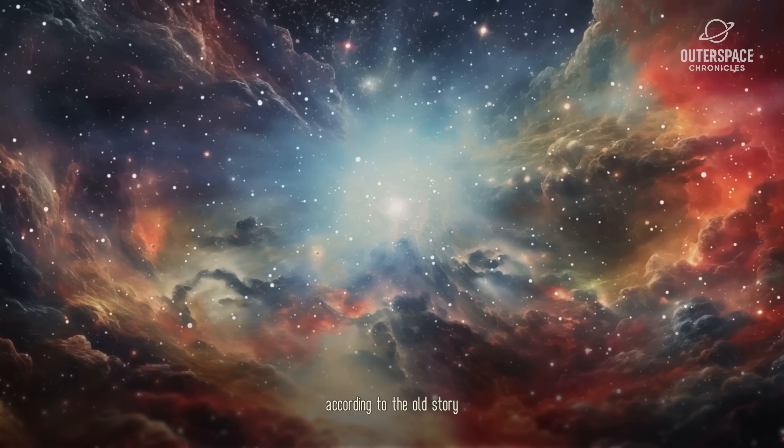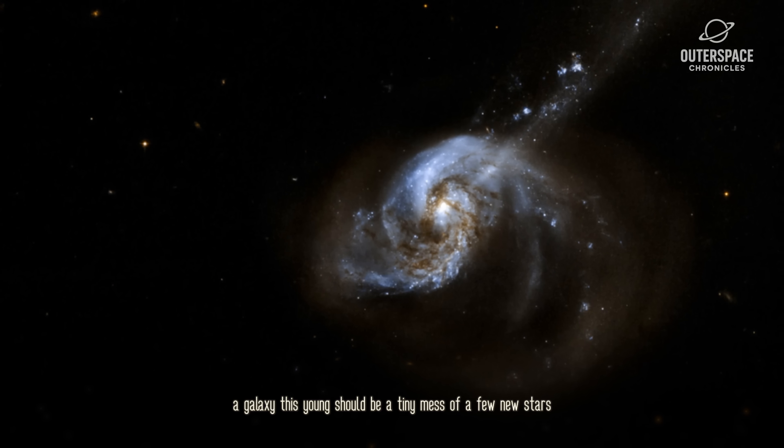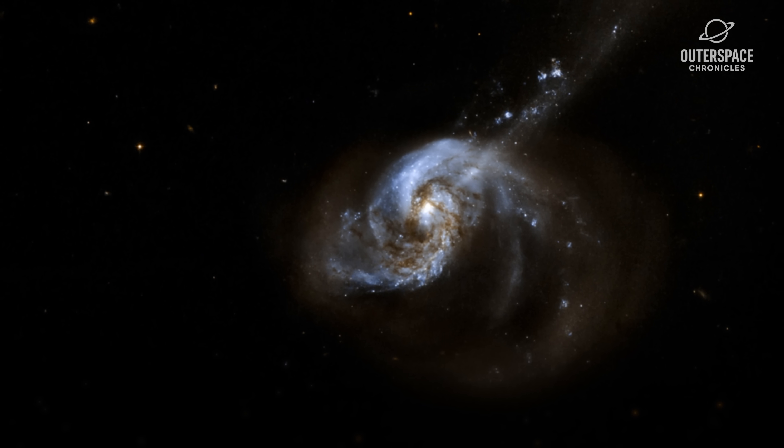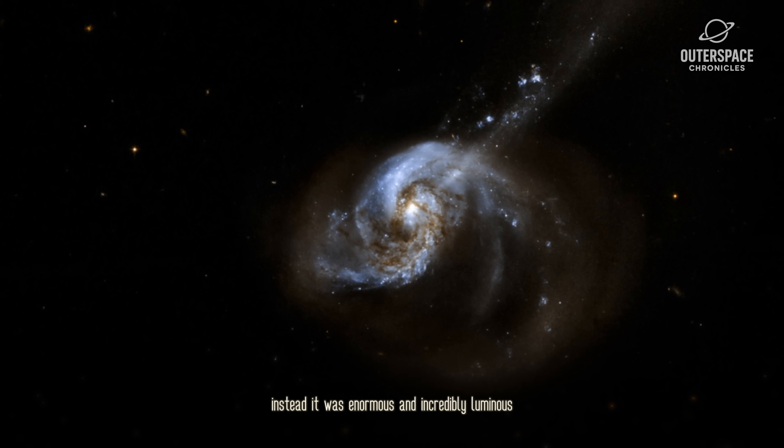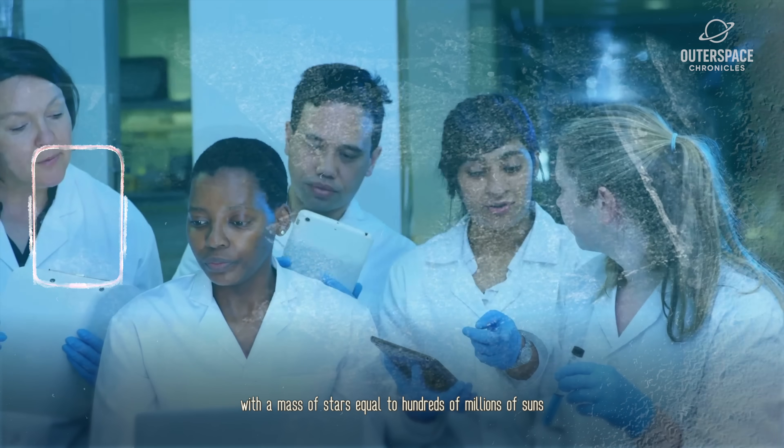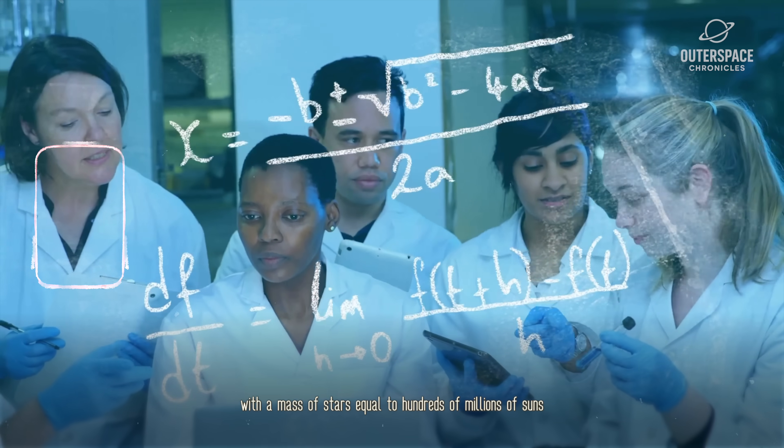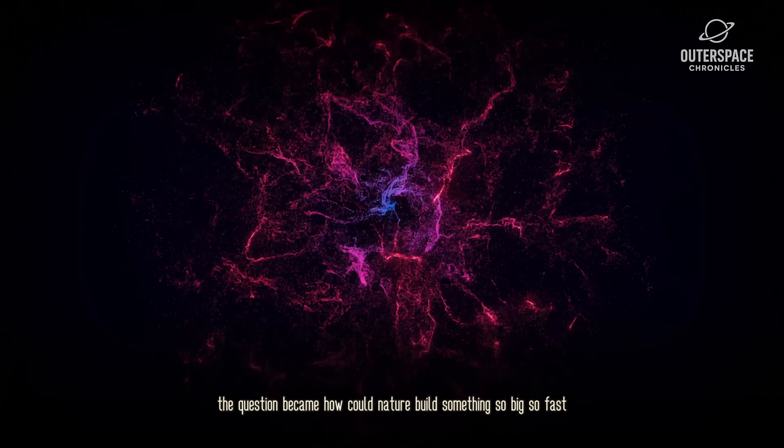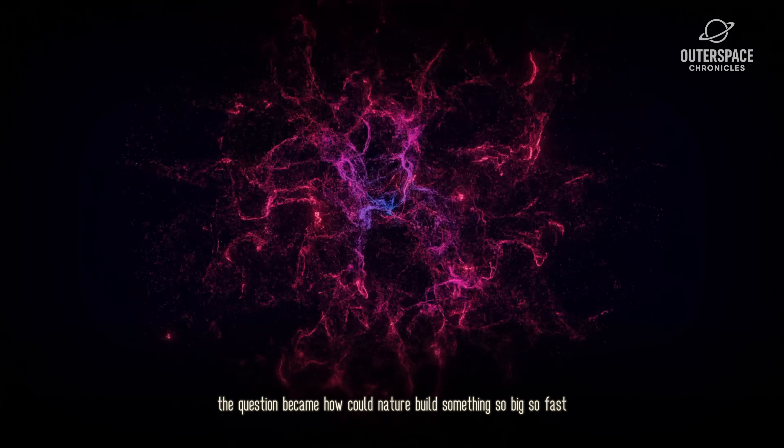According to the old story, a galaxy this young should be a tiny mess of a few new stars. Instead, it was enormous and incredibly luminous, with a mass of stars equal to hundreds of millions of suns. The question became, how could nature build something so big, so fast?